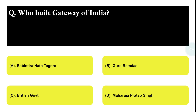Next question: who built the Gateway of India? Option A: Rabindranath Tagore, Option B: Guru Ramdas, Option C: British Government, Option D: Maharaja Pratap Singh. The correct answer is option C, that is the British Government.